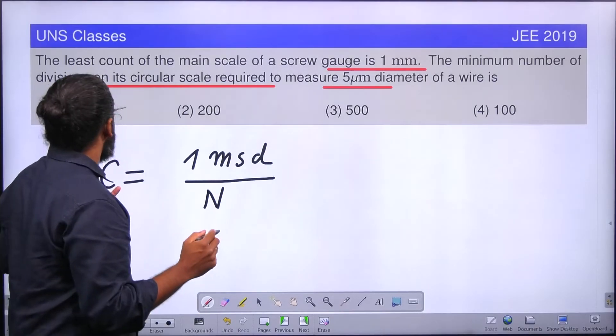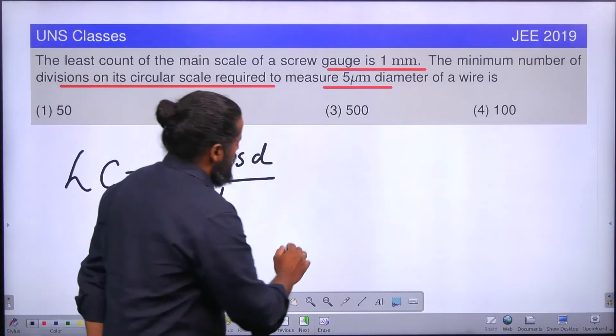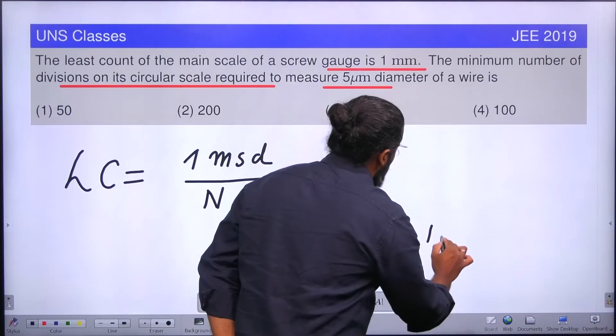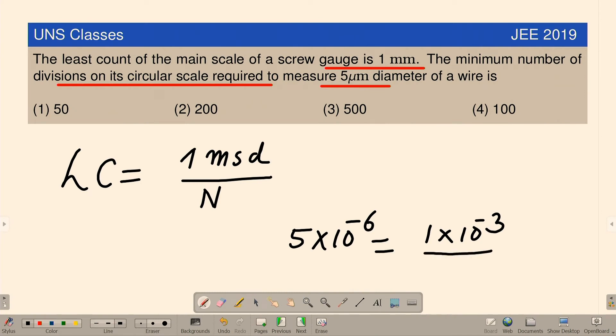Here, least count, we have to minimum measure 5 micrometer. That means we can write 5 into 10 to the power minus 6 as least count itself is equal to 1 MSD, 1 mm. So 1 mm means 1 into 10 to the power minus 3 divided by the number unknown quantity N. We have to find out that.